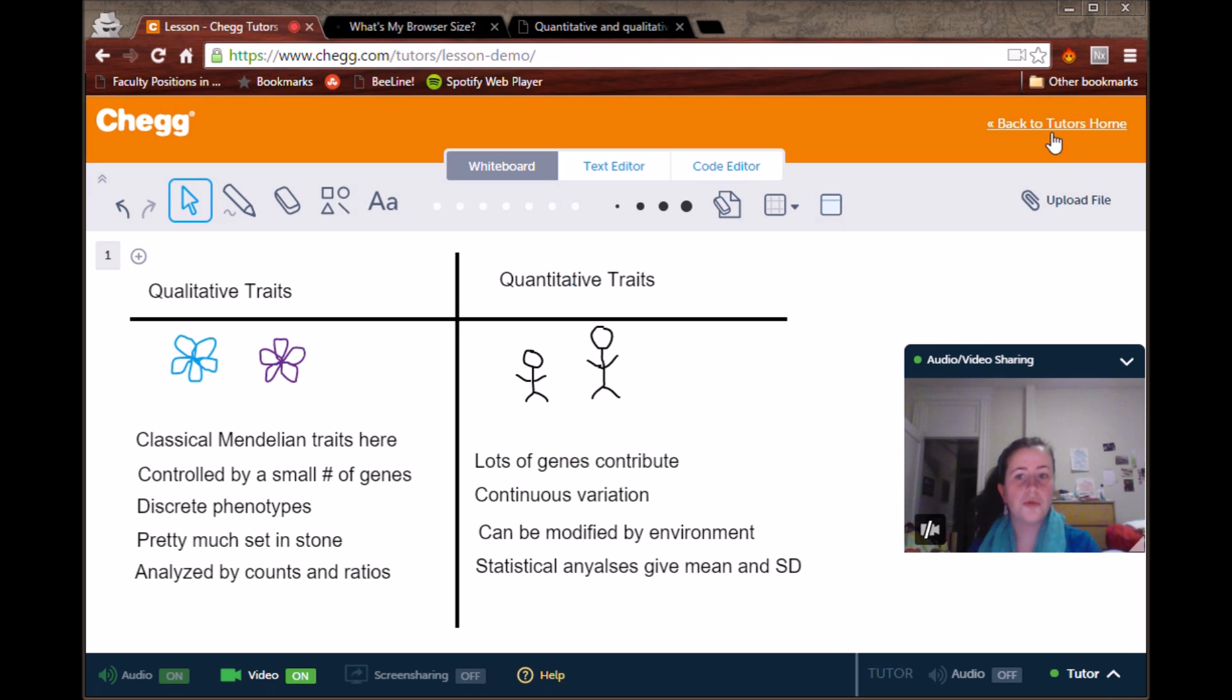As you might have guessed, qualitative traits are usually encoded by just one or two or at least a really small number of genes. Quantitative traits tend to be coded by a larger number of genes, up to 100 genes actually, because it's such a broader spectrum and it's such a more nuanced phenotype.